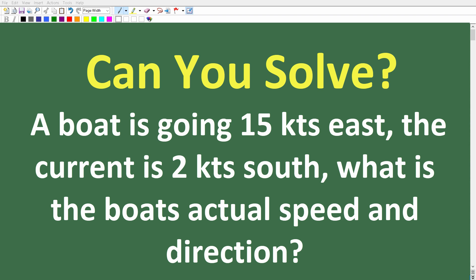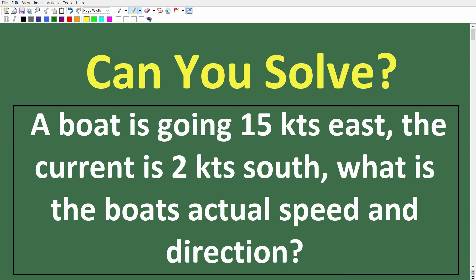Let's tackle this interesting math problem. We have a boat going due east at 15 knots. As a little aside, if you're on the ocean talking about boats, we don't use miles per hour — we use knots as a unit measure of speed. This boat is going due east at 15 knots and we have a cross current, which could be a river, lake, or ocean. This cross current is due south and traveling at two knots.